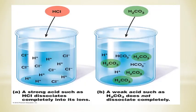For example, consider two beakers — one with HCl, which represents a strong electrolyte. It is 100% completely dissociated into its ions. On the other hand, H₂CO₃, that is carbonic acid, which is a weak acid and an example of a weak electrolyte — its ions are only slightly ionized, while the remaining ions are unionized.